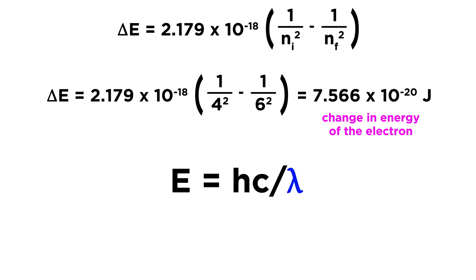Let's rearrange to solve for wavelength. We bring wavelength to the left and energy to the right, giving us λ = hc/E. The wavelength of the photon equals Planck's constant times the speed of light divided by the energy of the photon.